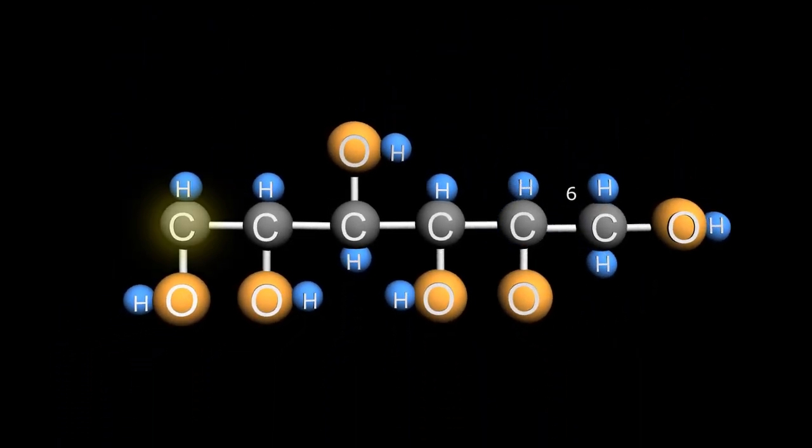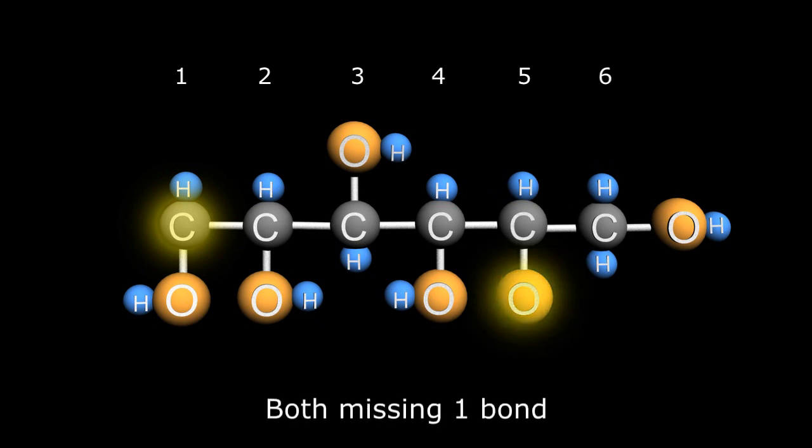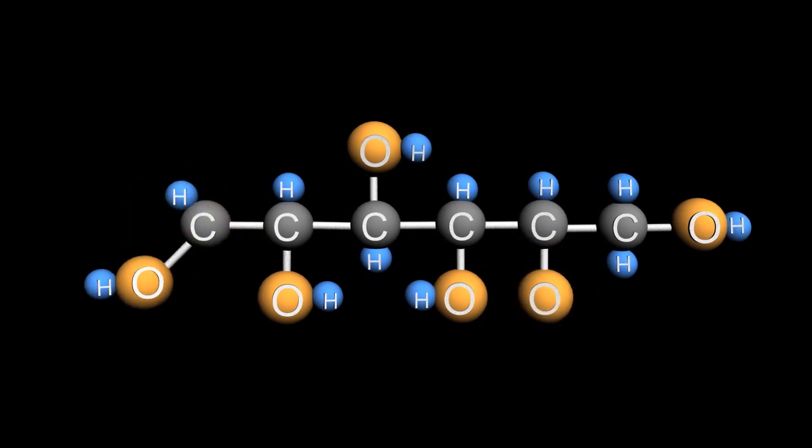We can see that carbon 1 and the oxygen on the bottom of carbon 5 are both missing one of their requisite bonds. To make everyone happy, the carbon 1 hydroxyl group is willing to give up its hydrogen atom and form a double bond to its carbon neighbor and the released hydrogen now binds to the carbon 5 oxygen, completing the required bonding of all the linear glucose molecule atoms.